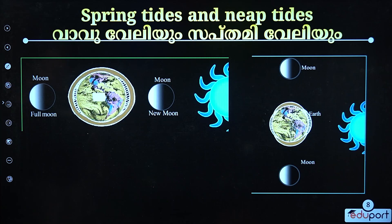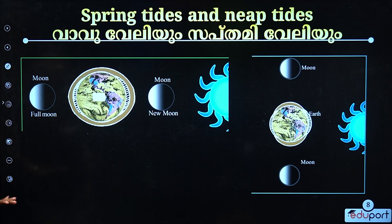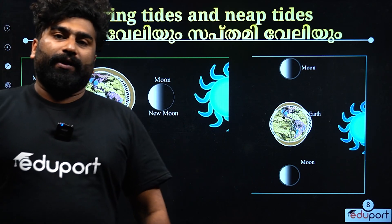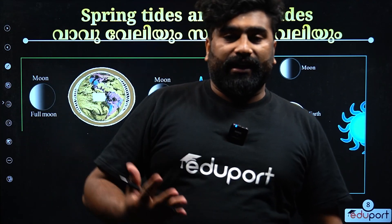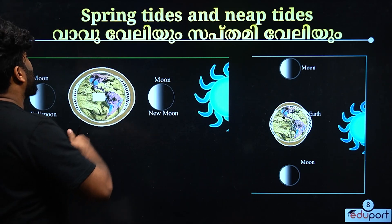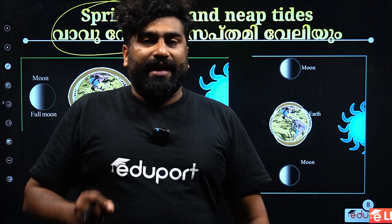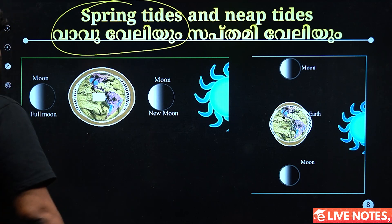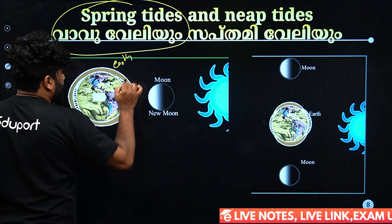Now you can learn about neap tide. The neap tide is very important. Why does the spring tide exist? The spring tide and the neap tide are key topics. The spring tide occurs mainly on full moon and new moon days. At that time, Earth, Moon, and Sun are involved.